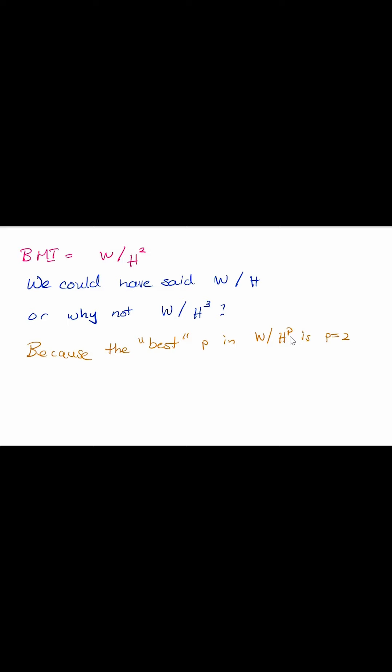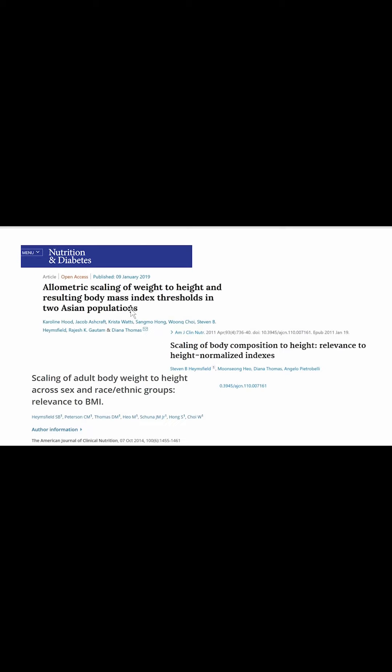We've done this in many different data sets — that is a group of papers, I just pulled three of them. We looked at male populations in India: they come out with 2. We looked at males and females from South Korea: also 2. Here we have different races in the United States — they're all 2, men and women, it doesn't matter. That optimal scaling constant is 2. So if I want to compare two people with the same weight, I have to divide their weight by height squared. It's a normalization of weight to height, and that's all BMI is.